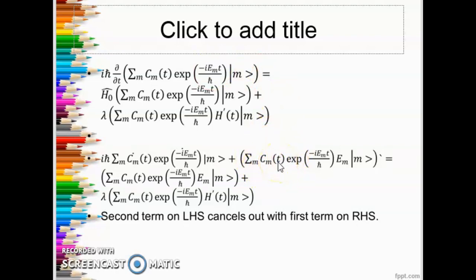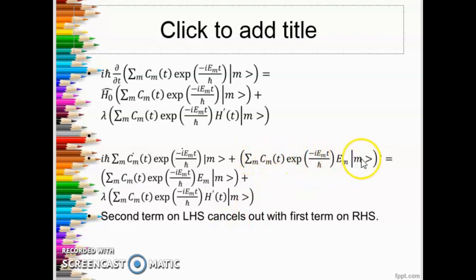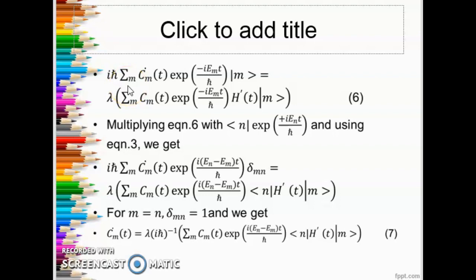On the right hand side there are two terms: one from H-naught and one from λH'. We observe that the second term on the left hand side cancels with the first term on the right hand side, and we are left with iℏ times summation over m of ċₘ(t) times the exponential bracket times |m⟩, equal to λ times the corresponding expression. Let this be equation 6.